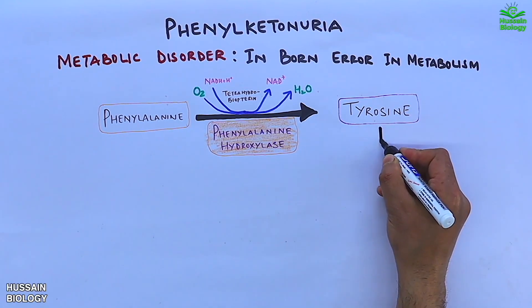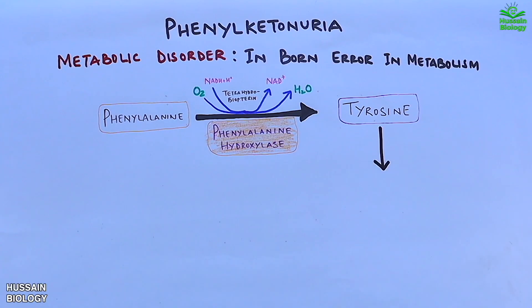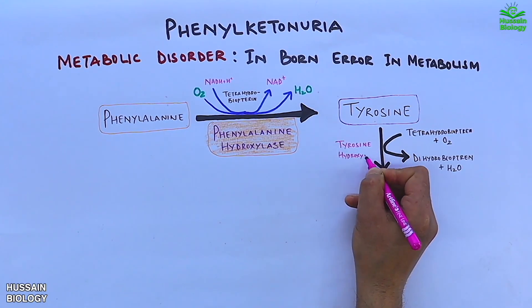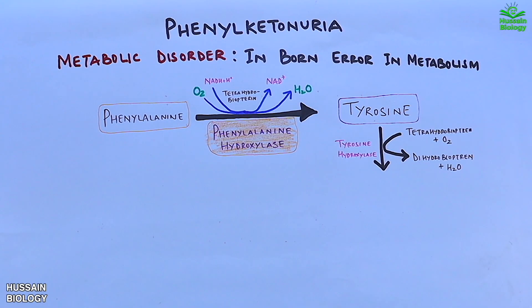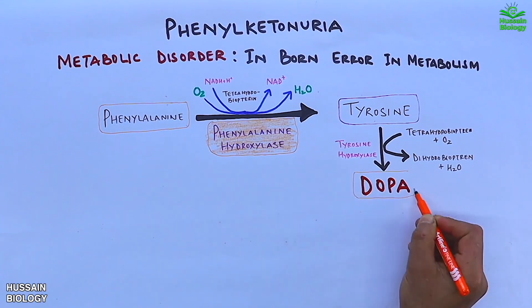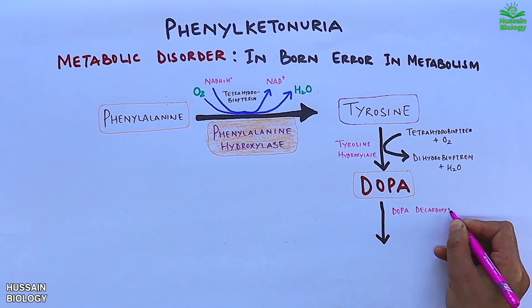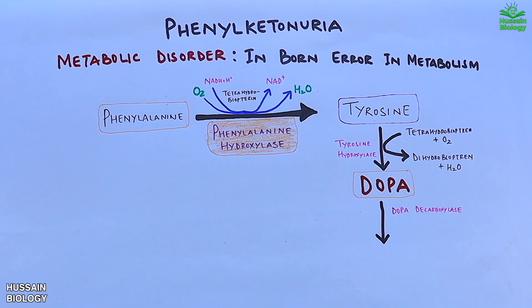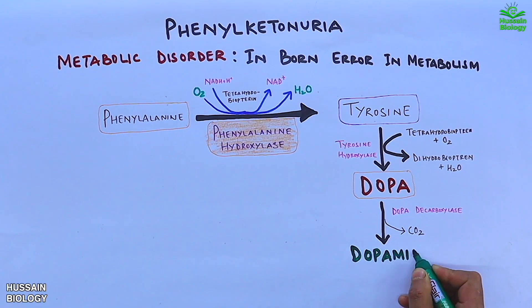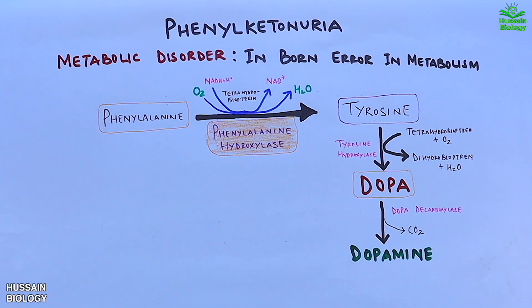In the next step, this tyrosine molecule is acted upon by tyrosine hydroxylase enzyme in the presence of tetrahydrobiopterin and oxygen, and converts tyrosine into DOPA. Then this DOPA is acted upon by DOPA decarboxylase enzyme and we get dopamine, as shown in the diagram.